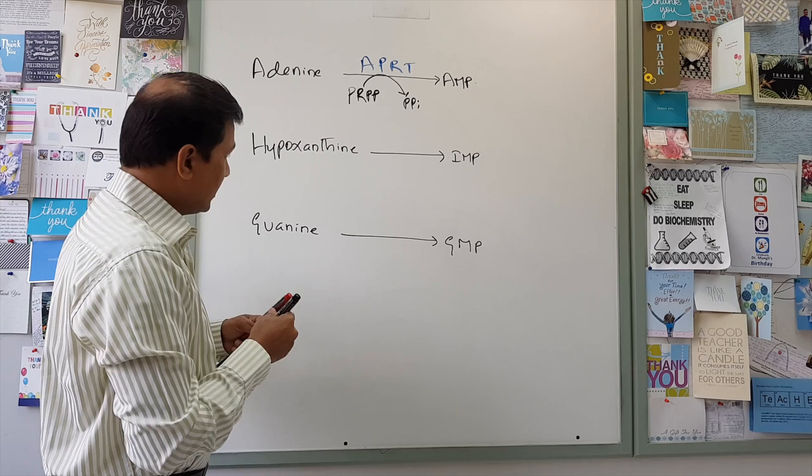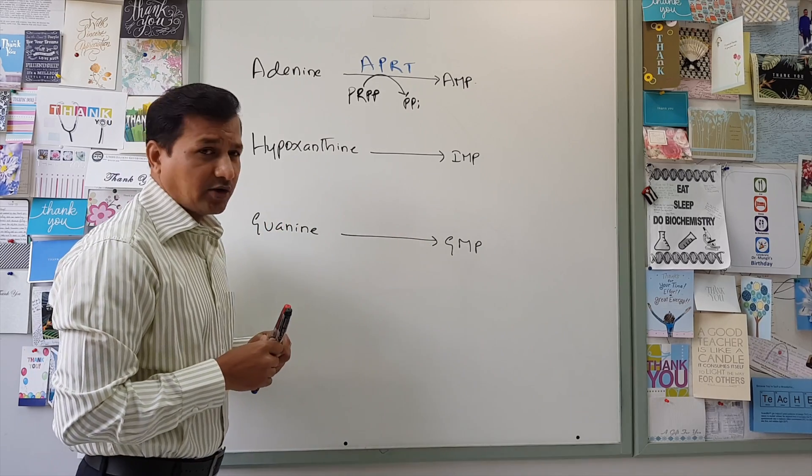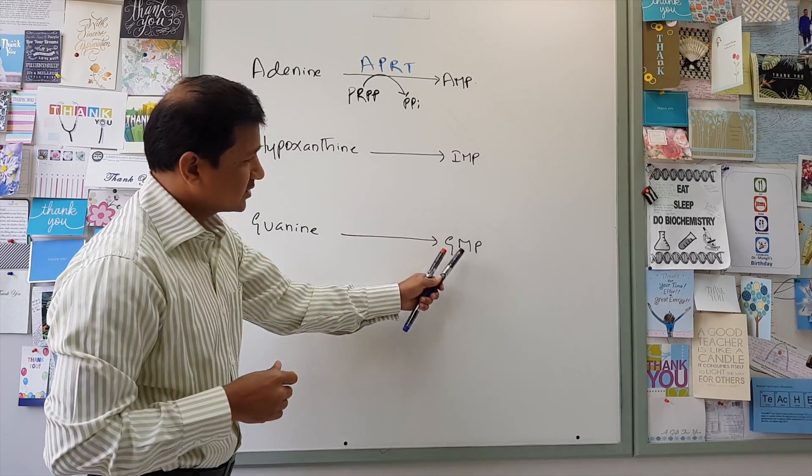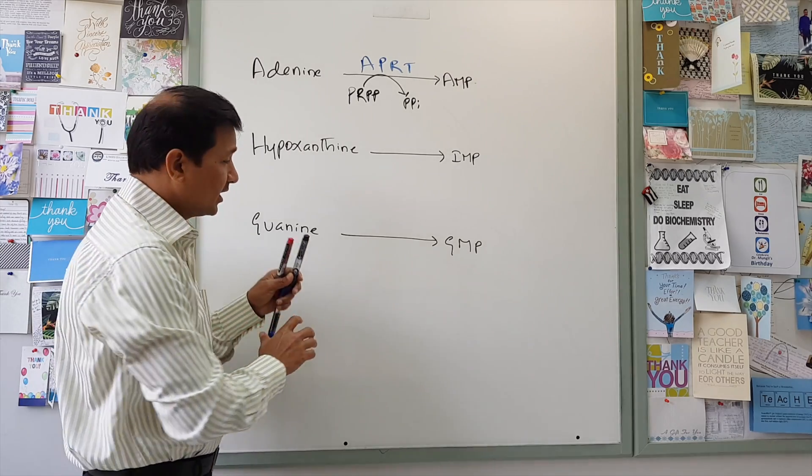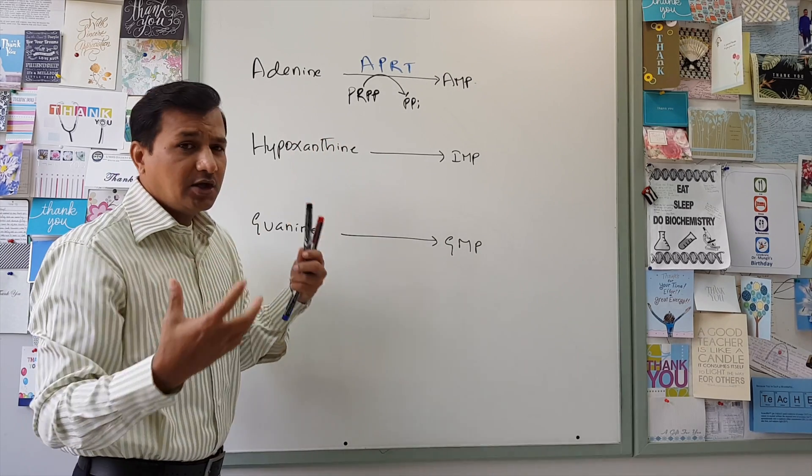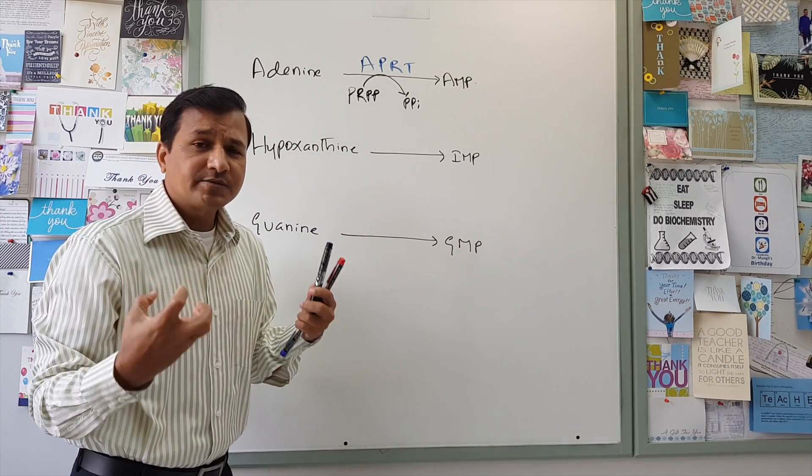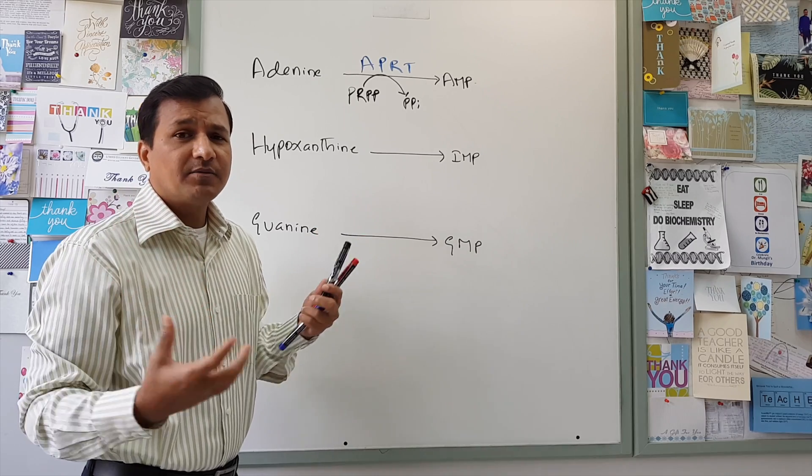In the same way, hypoxanthine is converted into inosine monophosphate, guanine is converted into guanosine monophosphate. So the cells are trying to reutilize free bases coming from cell turnover or maybe coming from the food.